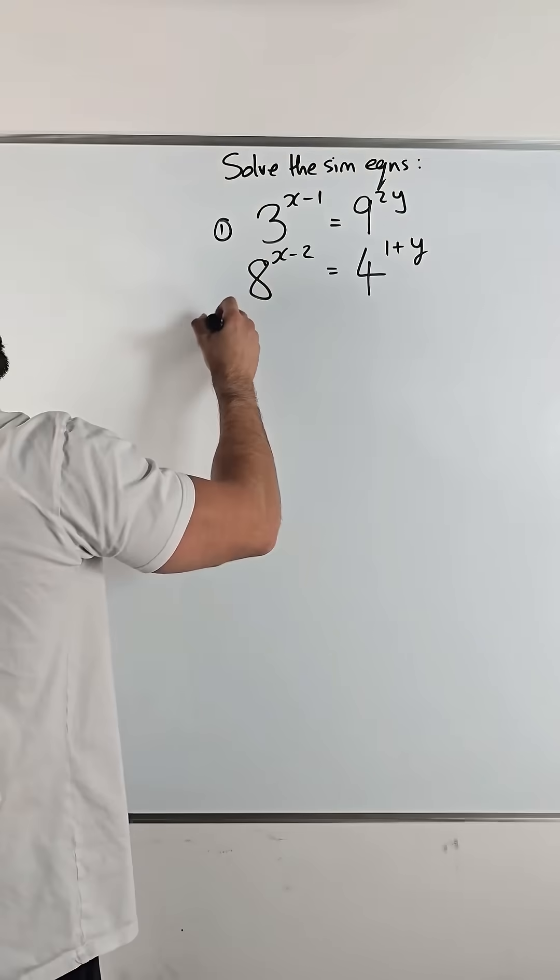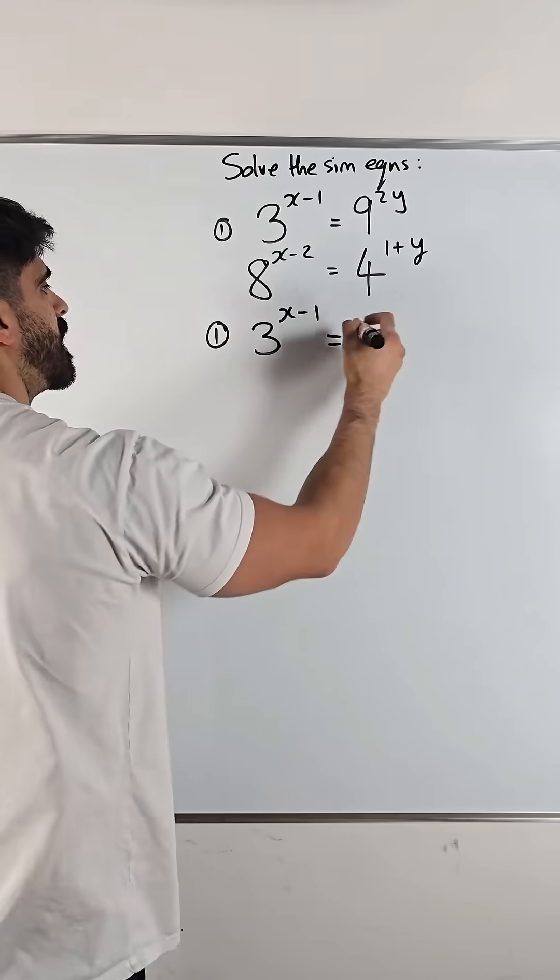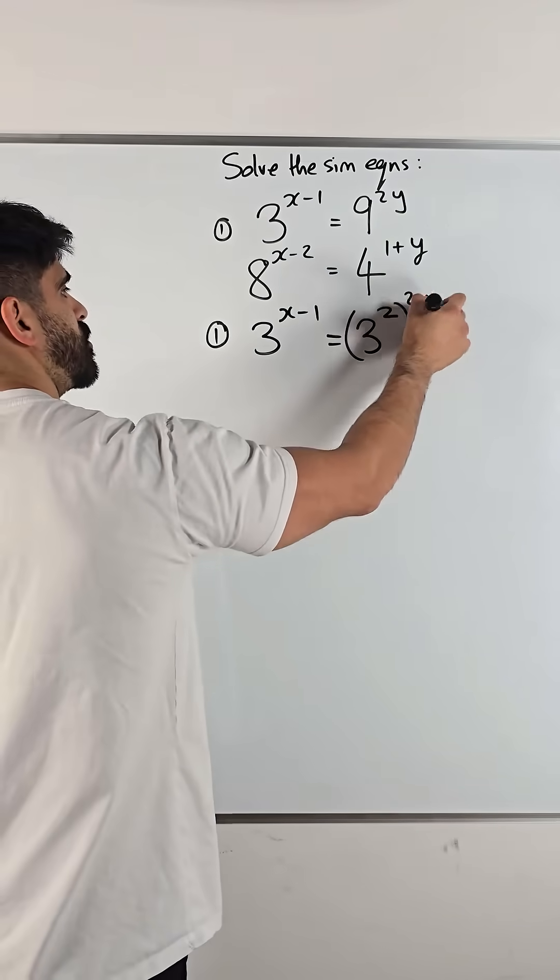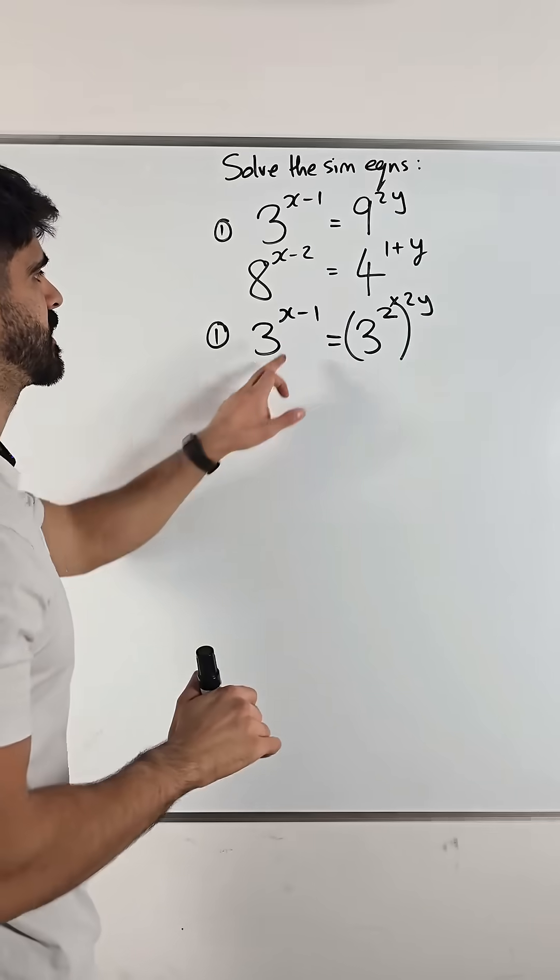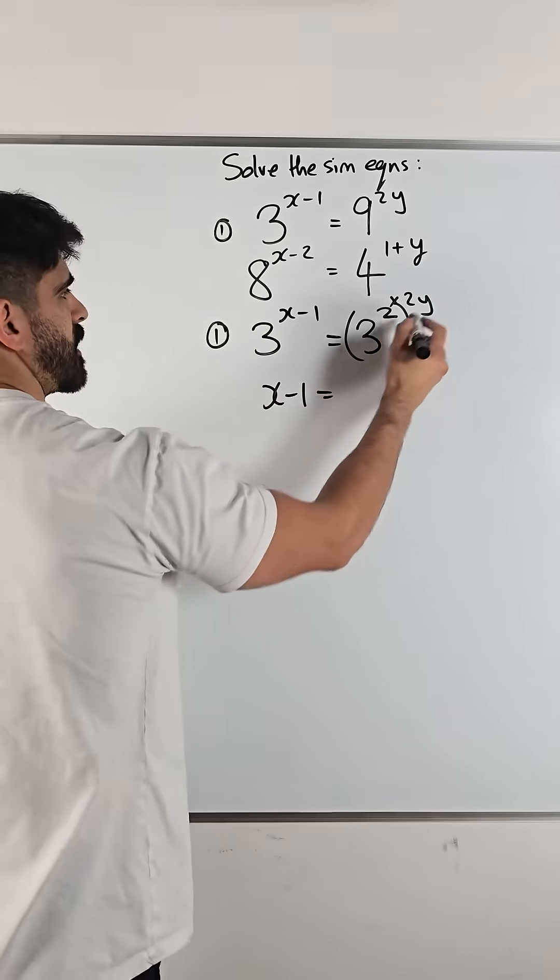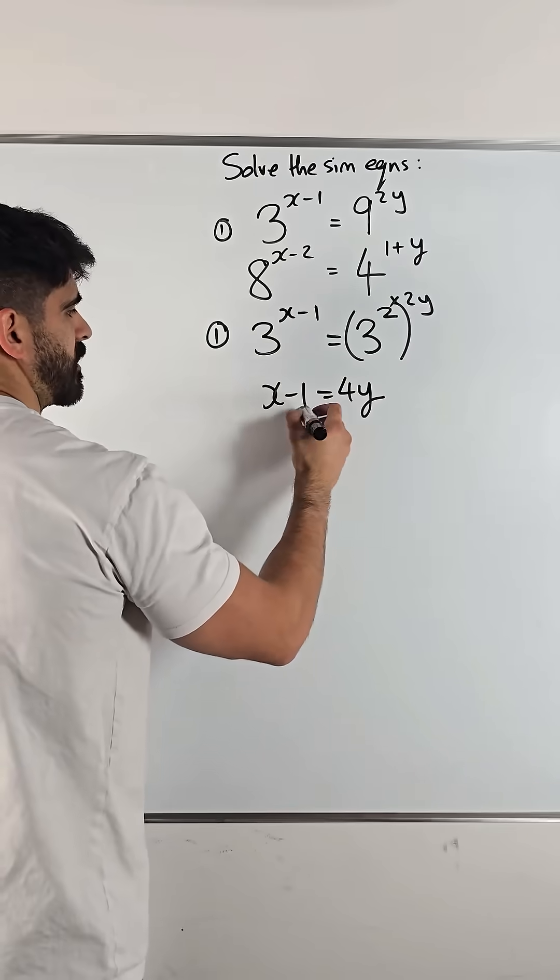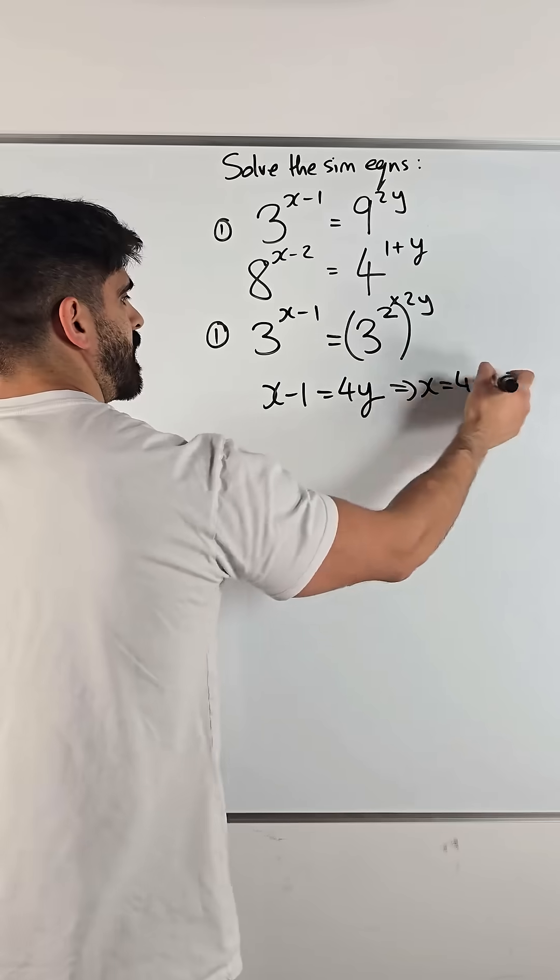So, I can rewrite equation 1 as 3 to the power of something and 9 is 3 squared. Make sure you keep in a bracket, 2y, because then you multiply the powers. Now we can say that the powers are the same. So, x minus 1 equals 2 times 2y is 4y. So, I could move the 1 over and say x is 4y and then plus 1.